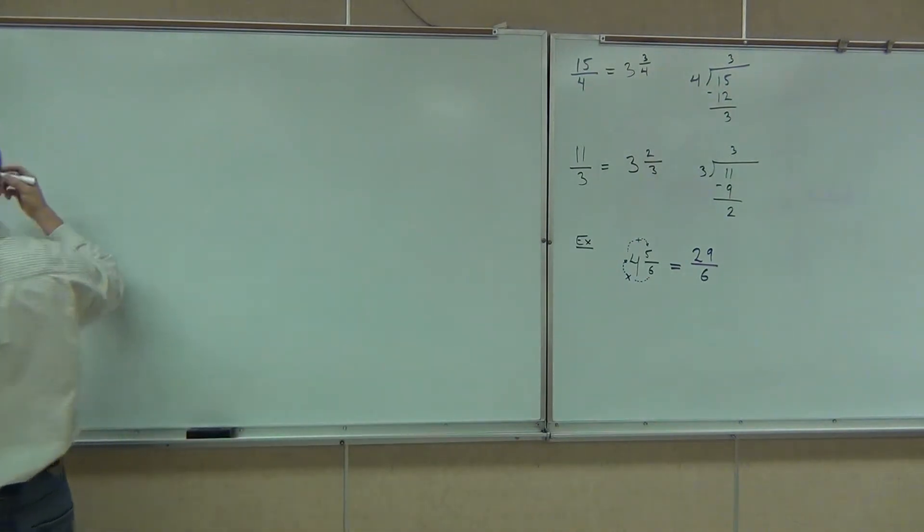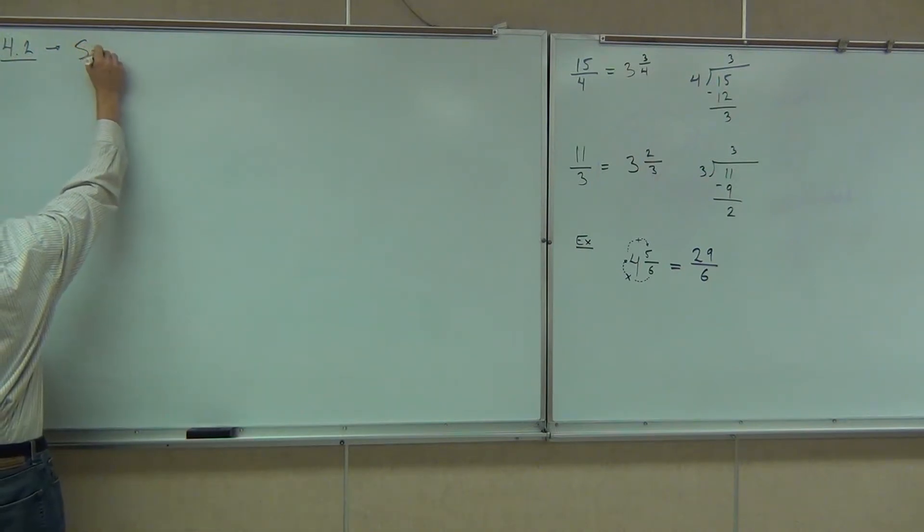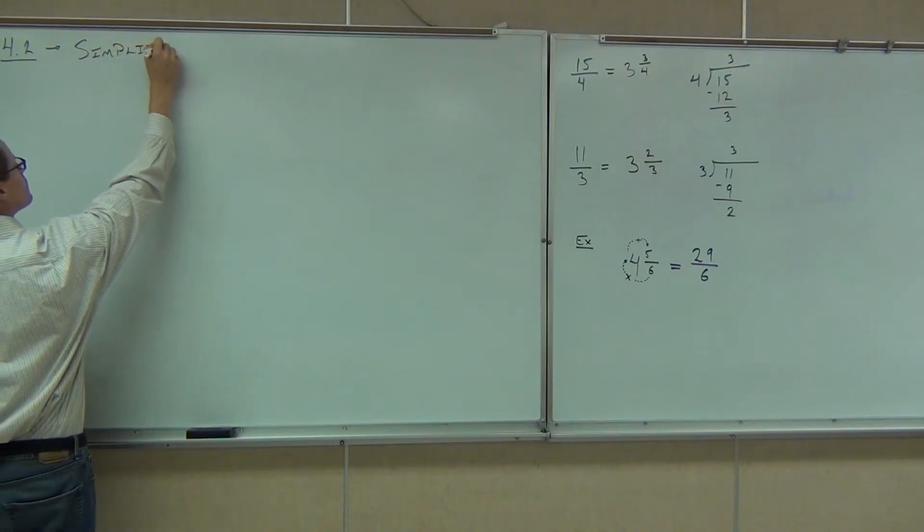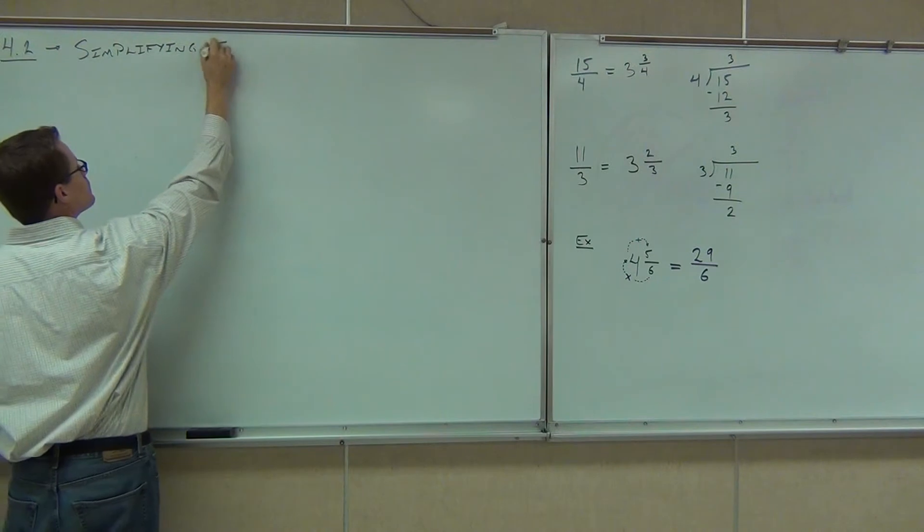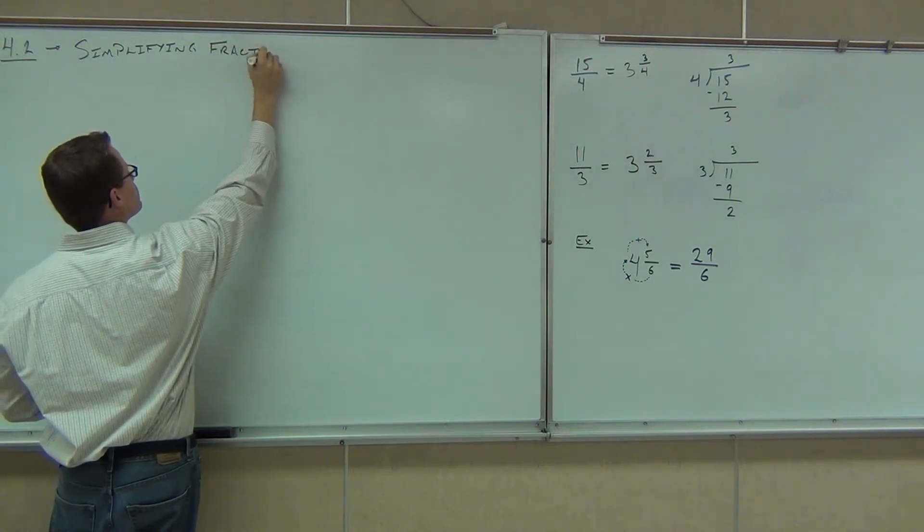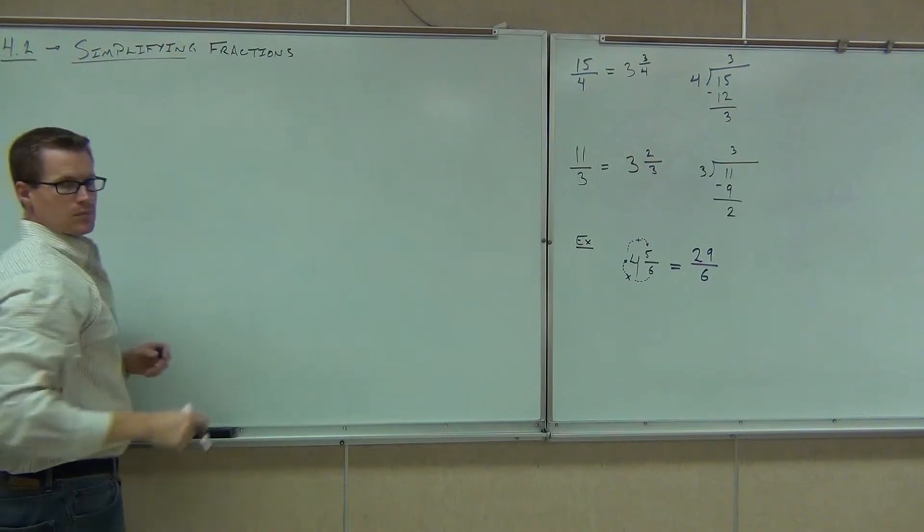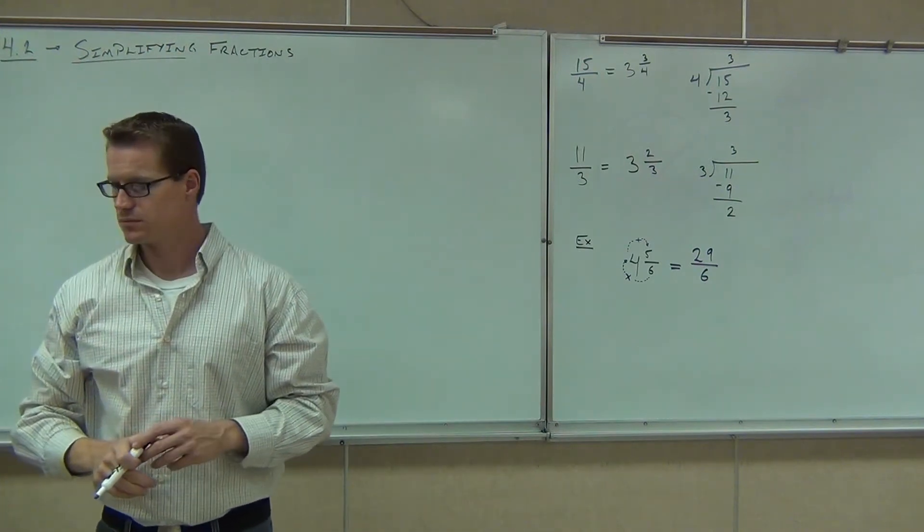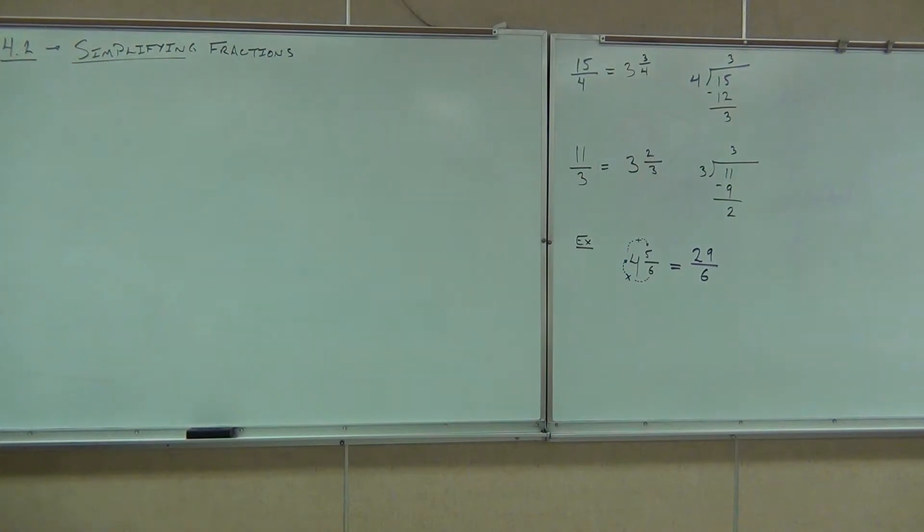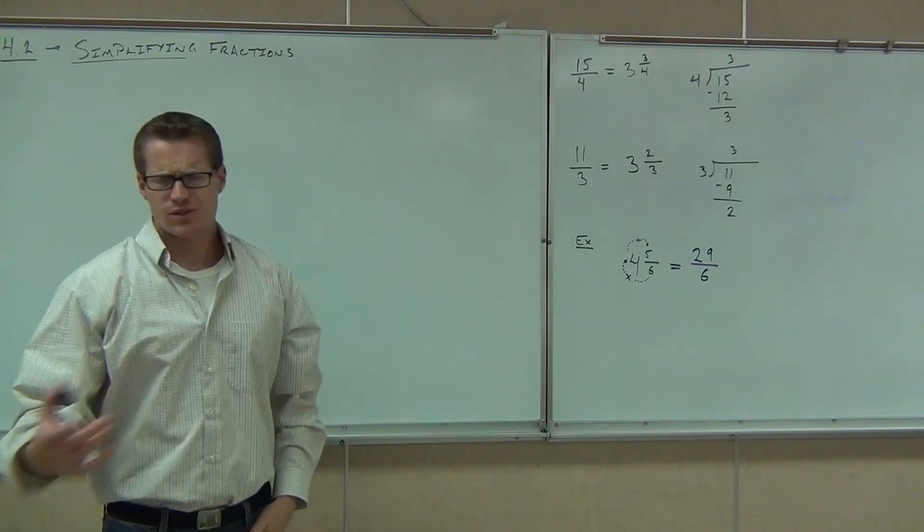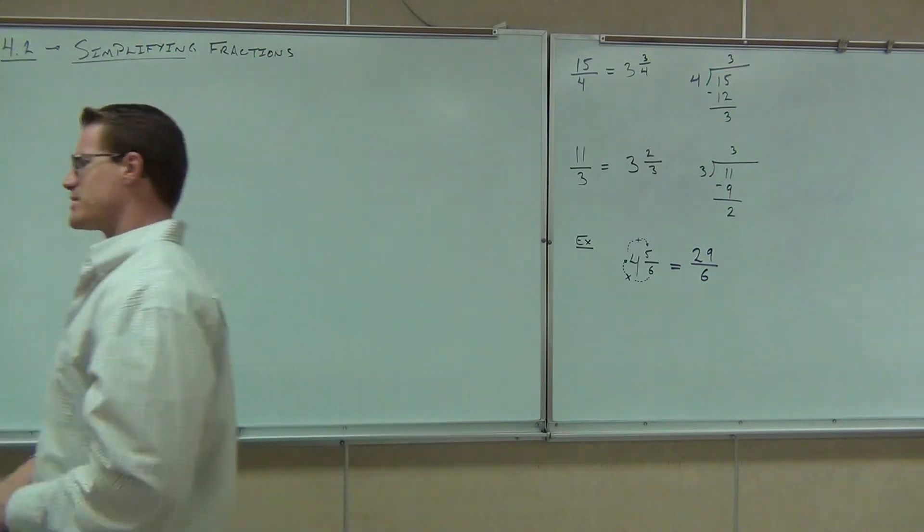So let's go ahead and start at 4.2. We're going to talk about how to simplify some fractions. You have to talk about prime numbers first and what exactly it means to be a prime number.